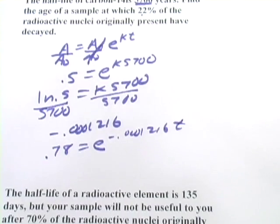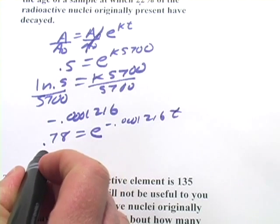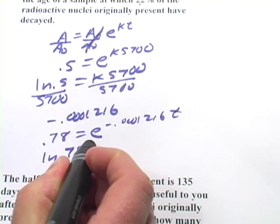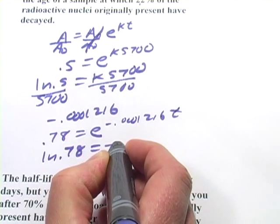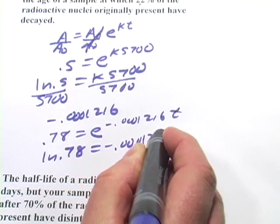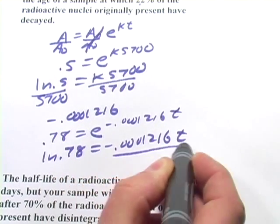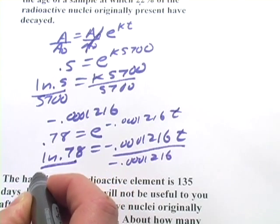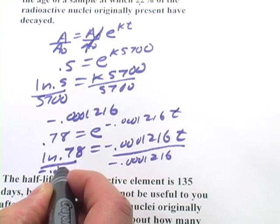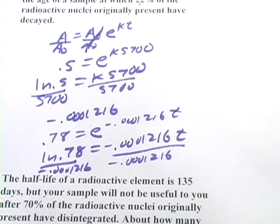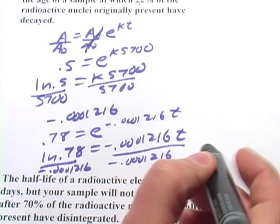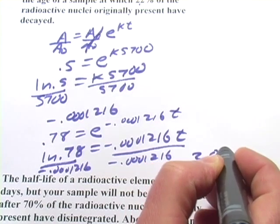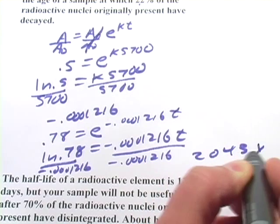And then we'll simply solve this for t, take the natural log of both sides. And so we'll end up dividing here. And when you crunch the numbers on that one, you should get 2,043 years, approximately.